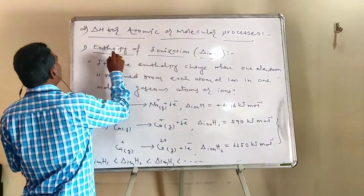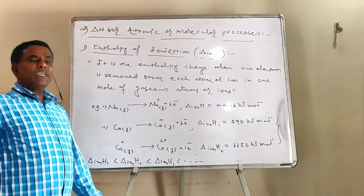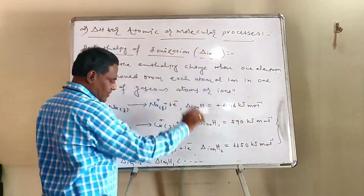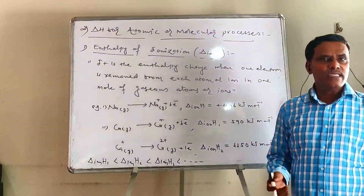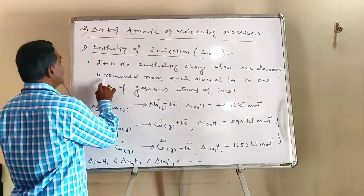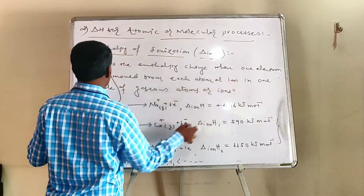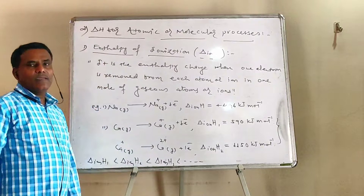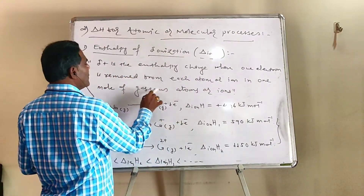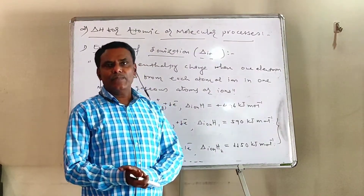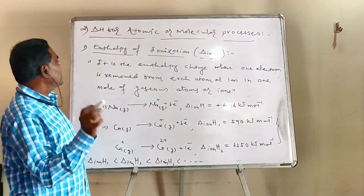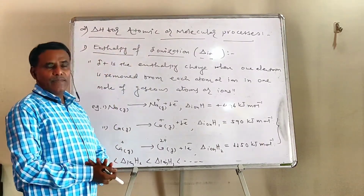In phase transition, we shall now cover enthalpy changes for atomic and molecular processes. First is enthalpy of ionization, delta ionization H. Ionization is simply formation of ions. It is the enthalpy change when one electron is removed from each atom or ion in one mole of gaseous atoms or ions. Whatever enthalpy change occurs during that process is the enthalpy of ionization.